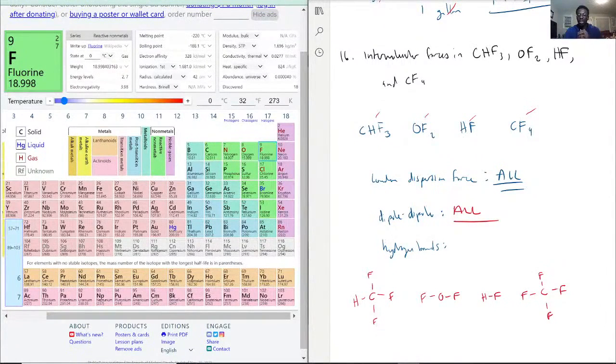Of these molecules, the only hydrogen bond present is here. In CHF3, carbon and hydrogen are attached, not hydrogen with fluorine. So we only have one that has a hydrogen bond, which is HF. These are the intermolecular forces present.